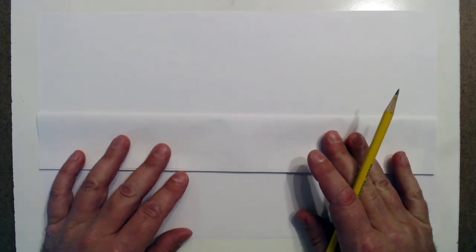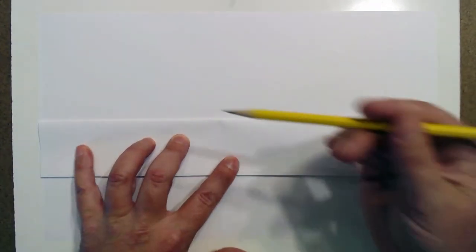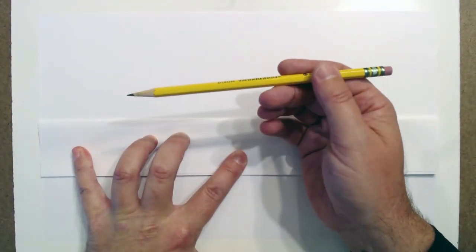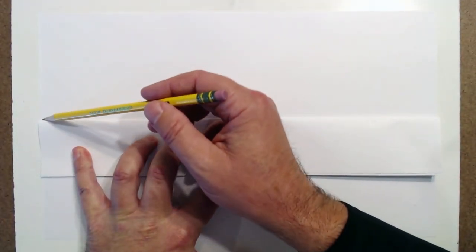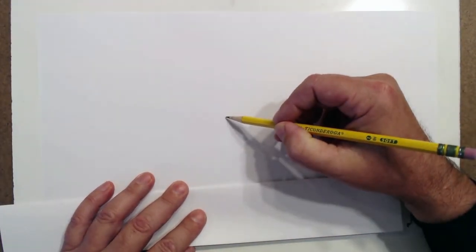Alright, so let's do it. The first thing we want to do is we want to create that horizon line. For the purposes of this exercise, what I want you to do is try and draw as light as possible. Holding the pencil back at the end of the pencil here, just very lightly go ahead and draw that horizon line. You should barely see it on this tutorial.